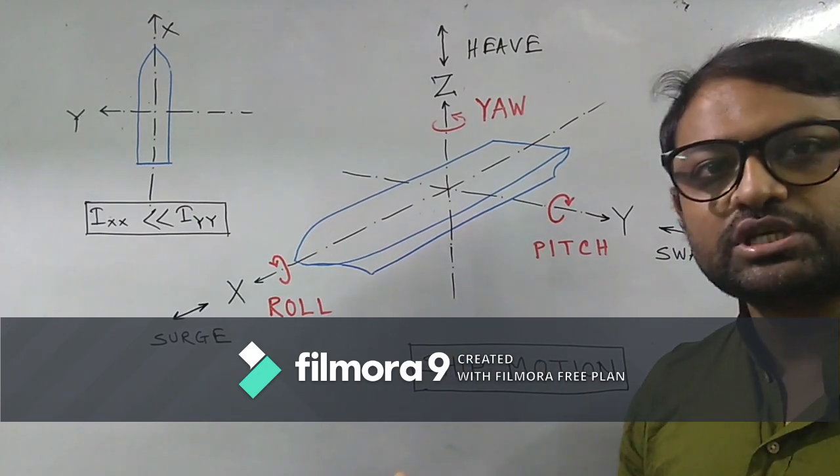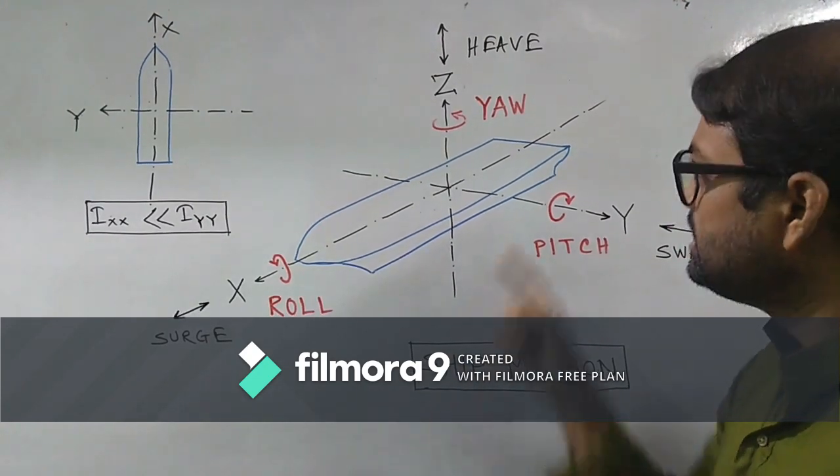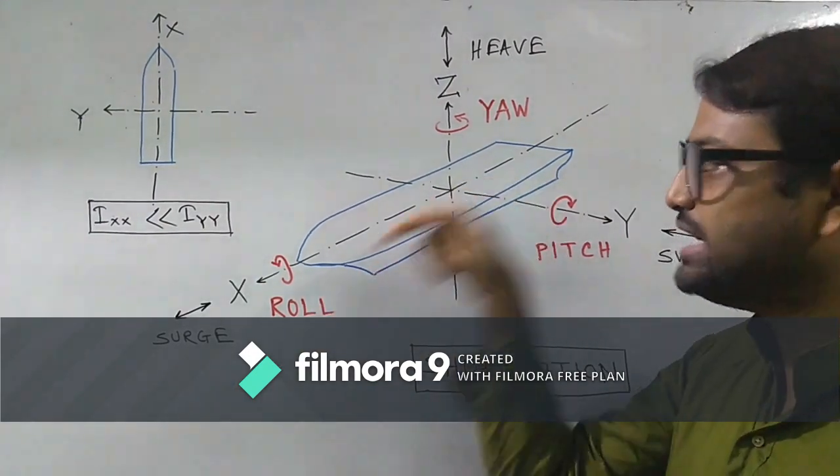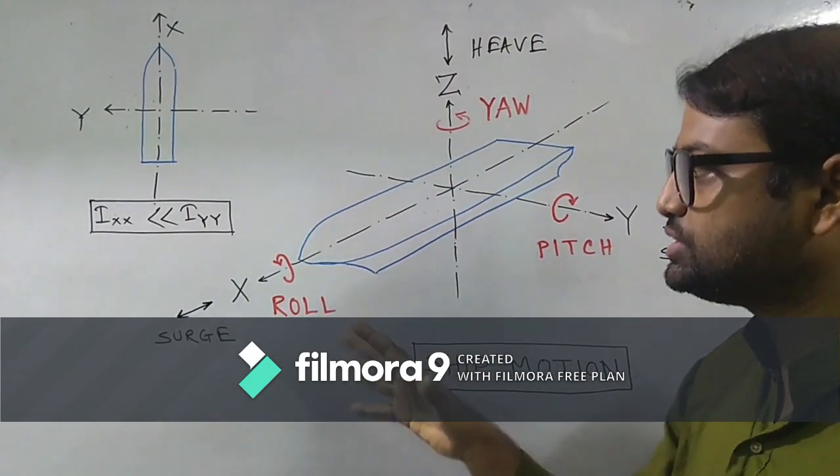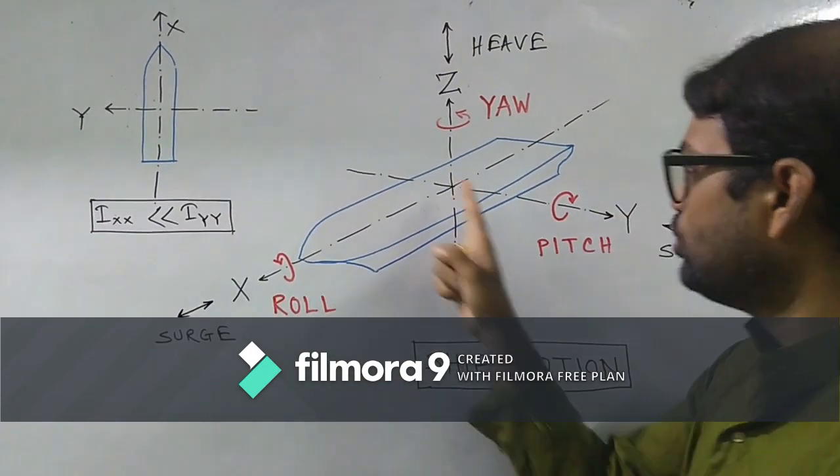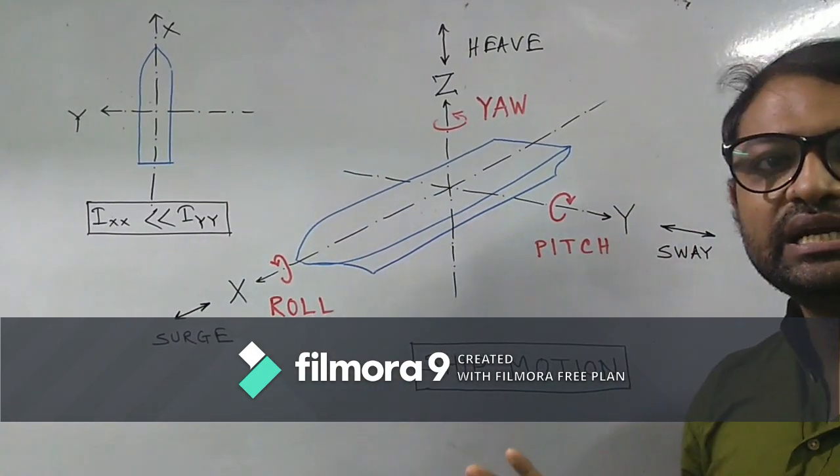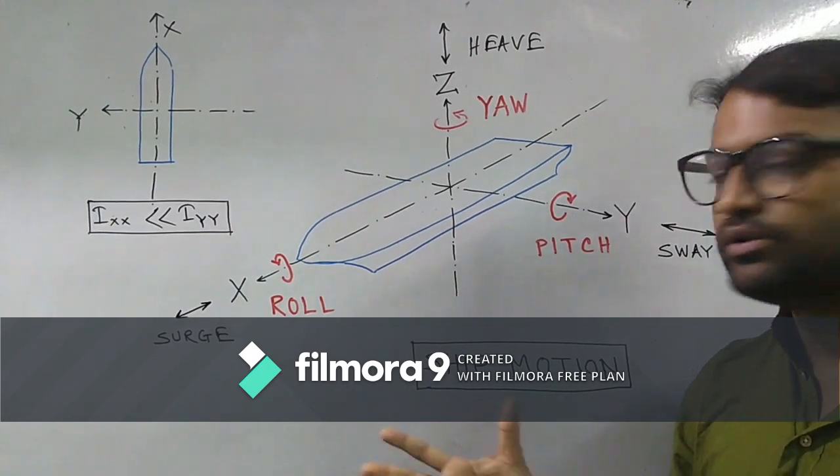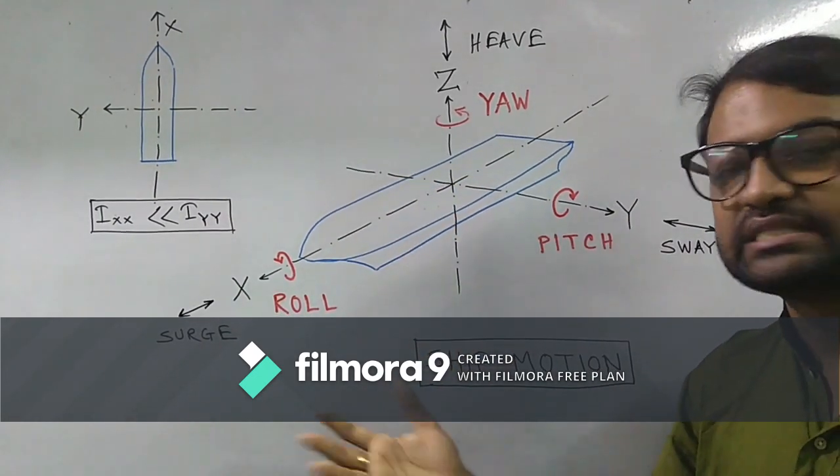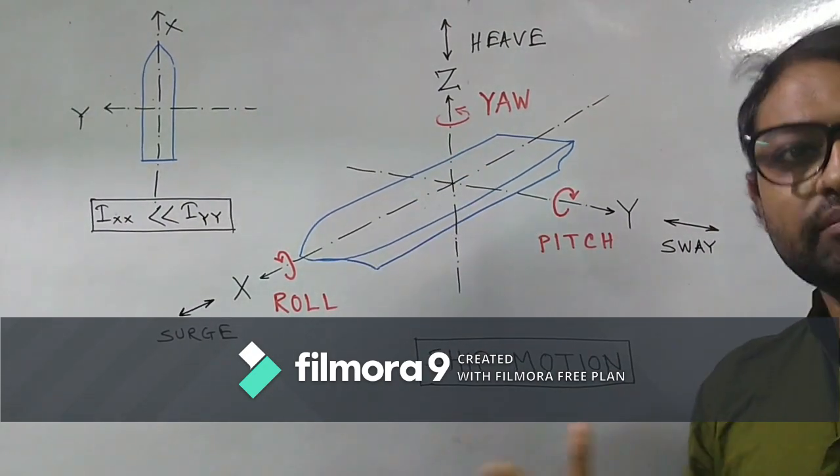What are the translational motions? First of all, this x-axis is along the longitudinal axis of the ship. We are considering x-axis as the longitudinal axis of the ship and y-axis is considered as the transverse axis, which is perpendicular to the x-axis, and z is our vertical axis.